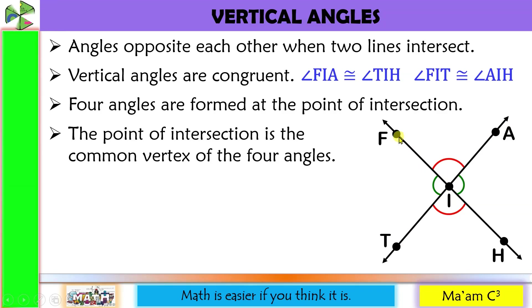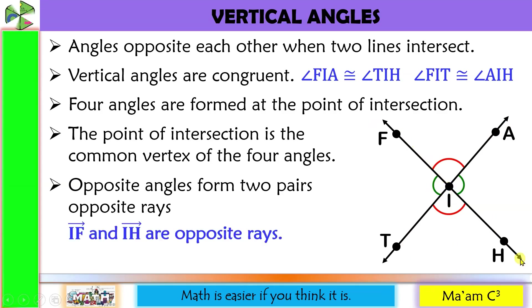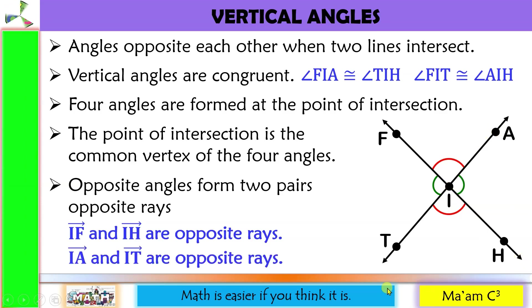Also, opposite angles form two pairs of opposite rays. Here's the first pair: ray IF with ray IH. Another pair: ray IA with ray IT. They are opposite rays.